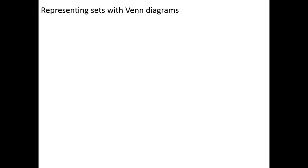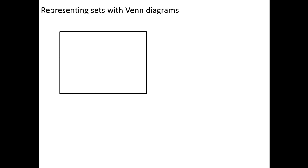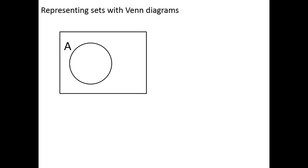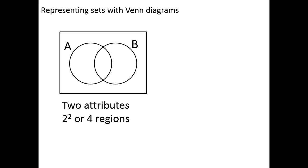Let's go back to Venn diagrams. We use a rectangle for the universal set and circles to represent attributes of subsets. If we have a universal set with two identified attributes, A and B, then we can separate that universal set into 2² = 4 regions. It's sometimes useful to number these regions — 1, 2, 3, 4 — just so we can identify them. The numbering isn't always the same; we're simply numbering regions so we can refer to them easily.